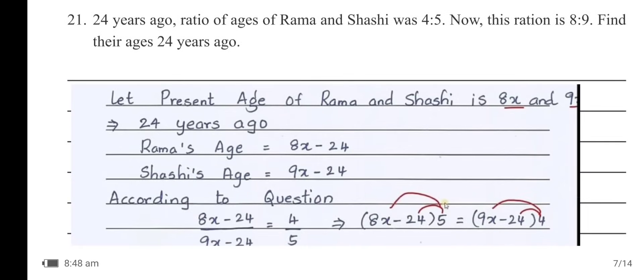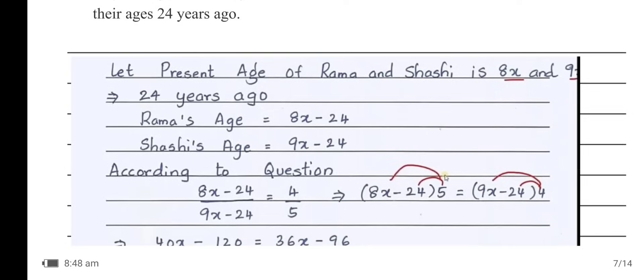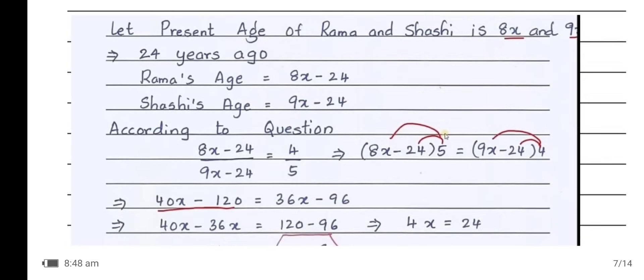24 years ago the ratio of ages of Rama and Shashi was 4:5; now this ratio is 8:9. Find their ages 24 years ago. Let the present ages of Rama and Shashi be 8x and 9x. Then 24 years ago Rama's age was 8x − 24 and Shashi's age was 9x − 24. According to the question, (8x − 24)/(9x − 24) = 4/5.